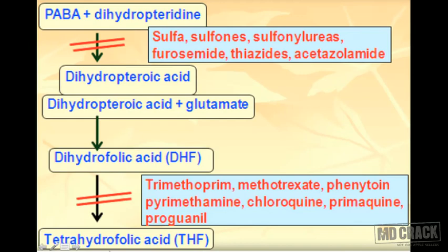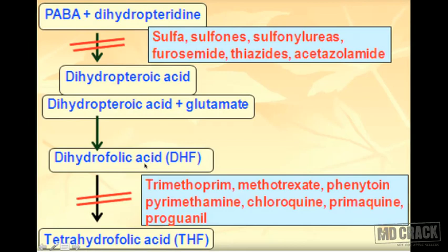The first step — conversion of PABA to DHF — is inhibited by sulfa drugs, sulfones, sulfonylureas, and many diuretics with a sulfonamide structure such as furosemide, thiazide diuretics, and acetazolamide. These all act on this first step and decrease the availability of DHF.